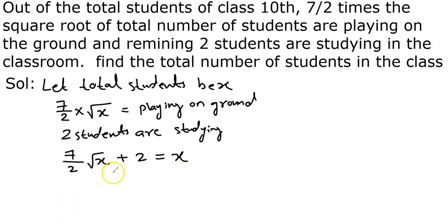Kyunki ye total bachche hain. Sabse pehle, is plus two ko hum yahan shift karenge, minus two mein aajayega. Seven upon two root x is equal to x minus two.